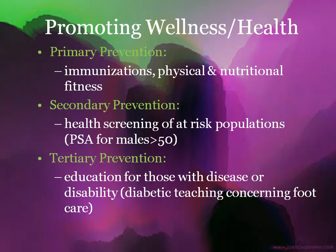Secondary prevention is where we see a lot of the screening procedures. For example, the PSA or prostate blood test for males over the age of 50. You could also include doing mammograms for females to screen for breast cancer or pap smears. Those would all be screening procedures for higher-risk populations.